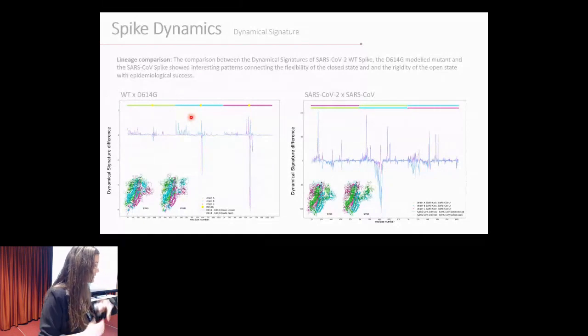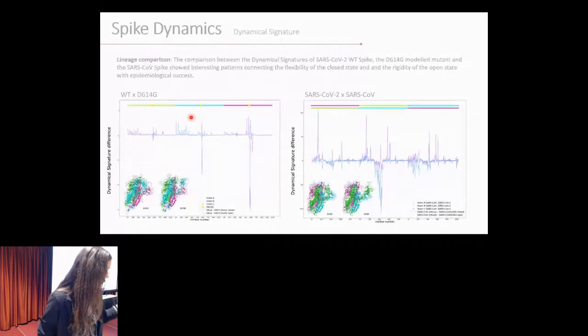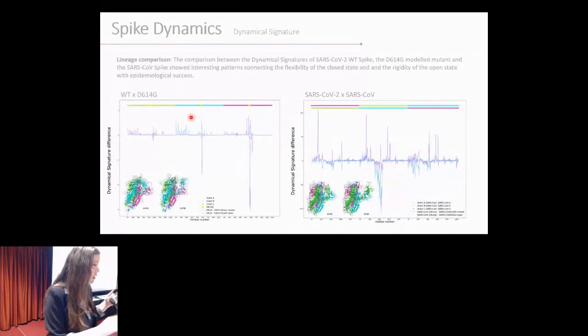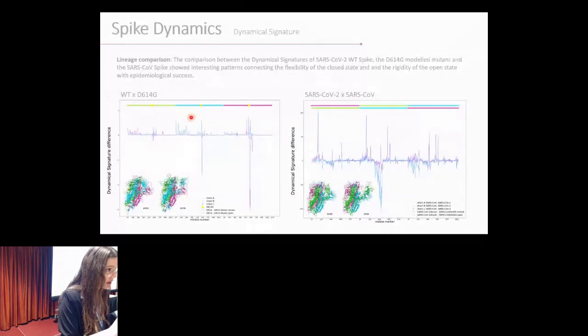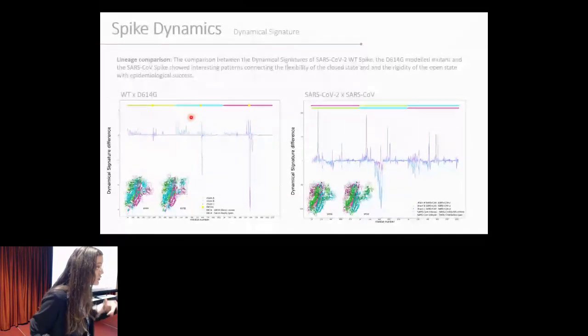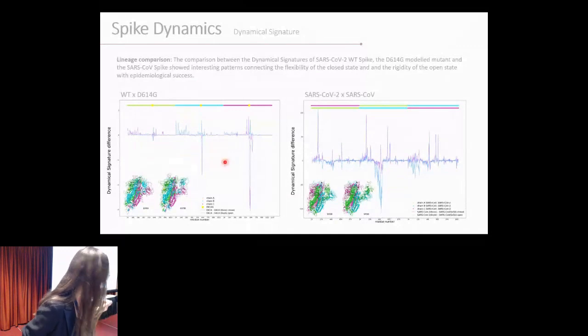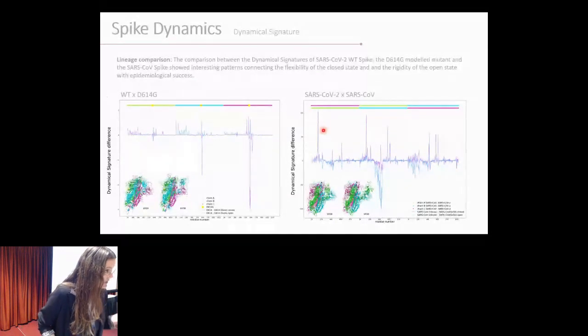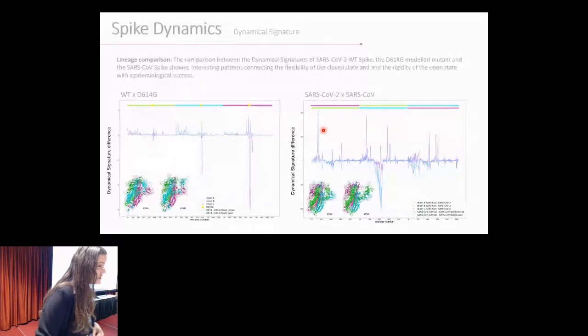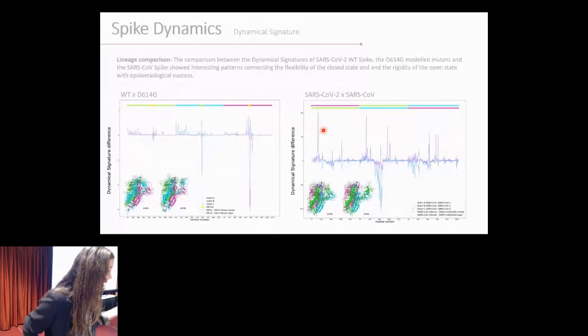That made us think that because the flexibility is increased in the closed structure, and the flexibility is decreased in the open structure, maybe this new mutation was making the spike protein more prone to open and less prone to close. At that time, the only way that we could compare this hypothesis was to compare it to the old SARS-CoV spike, and we did see opposite results. The old SARS-CoV spike was more rigid in the closed state and more flexible in the open state, especially around the open RBD.